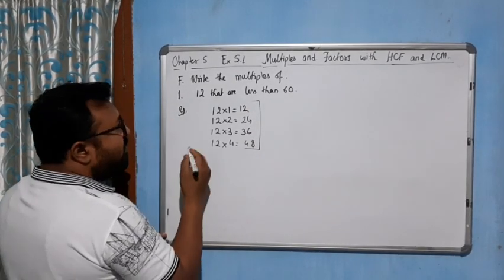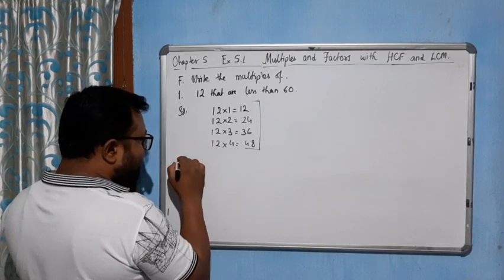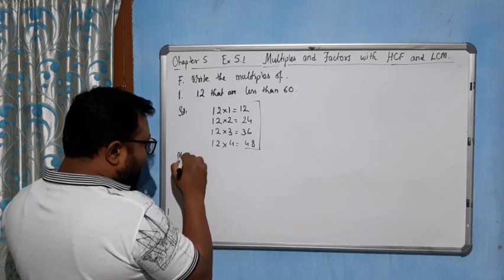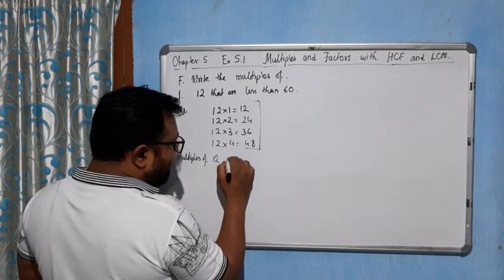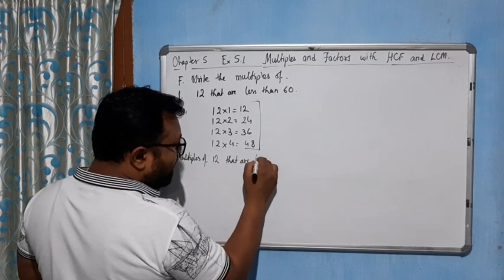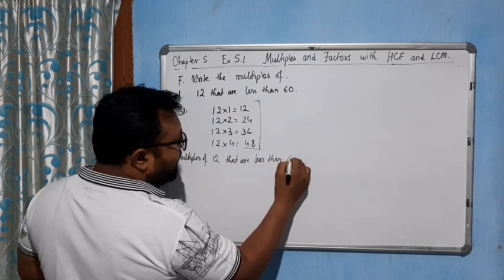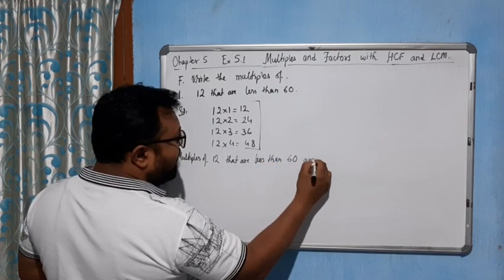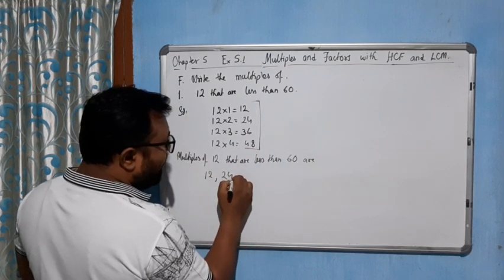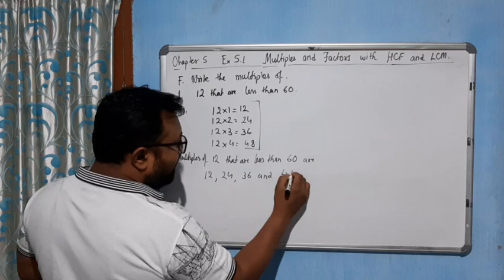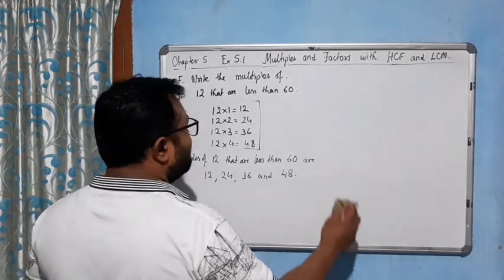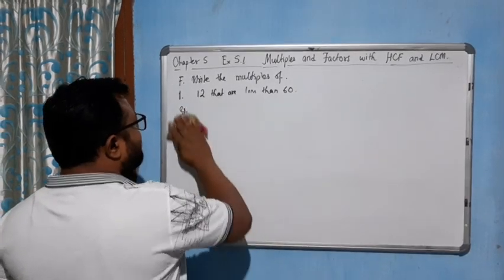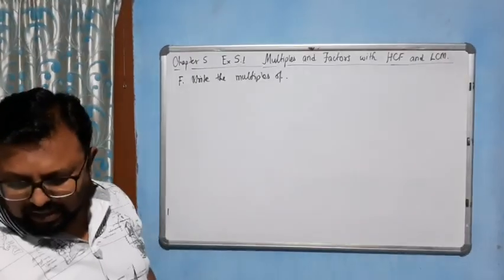So the multiples of 12 that are less than 60 are: 12, 24, 36, and 48. Now we will do the next question — multiples of 15 that are less than 50.